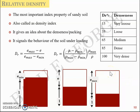Good morning. We'll continue our discussion on the index properties of soil. Just to refresh, we started off with what index properties mean. Index properties include the particle size distribution, the plasticity features, and relative density. We had defined gradation analysis, effective size D10, uniformity coefficient, and coefficient of curvature based on sieve analysis and hydrometer analysis.